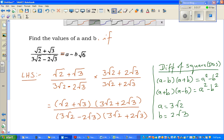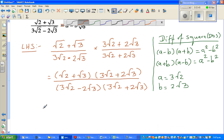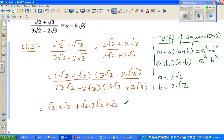So now you have to expand. I'll do more steps so that you understand. So this is root 2 times 3 root 2. Plus I'm using the FOIL method. So that is root 2 times 3 root 2 plus root 2 times 2 root 3 plus root 3 times 3 root 2 plus root 3 times 2 root 3.